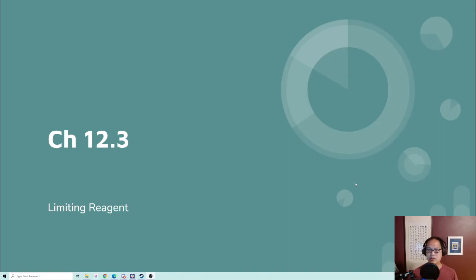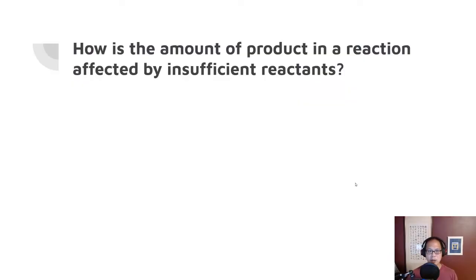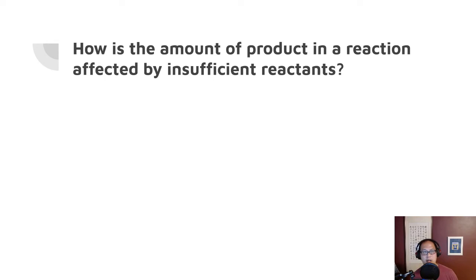We'll be talking about limiting reagent today. The essential question we're trying to answer is: how is the amount of product in a reaction affected by insufficient reactants? In other words, when you are making something out of a bunch of stuff, if some of that stuff runs out, how do we figure out what stuff's going to run out first, and how does that affect how much of our product we can make?